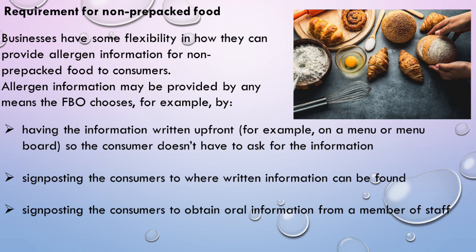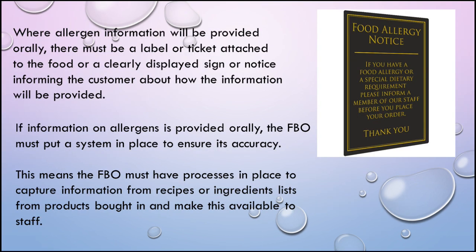Allergen information may be provided by any means the FBO chooses. For example, by having the information written up front on the menu or menu board, so the consumer doesn't have to ask. It's always important that if the information is there, it is available for the customer to see it. Another option is signposting consumers to where written information can be found, or signposting them to obtain oral information from a member of staff.